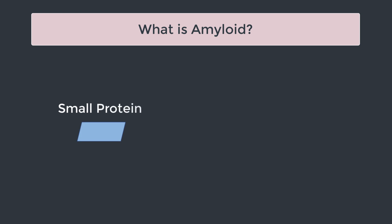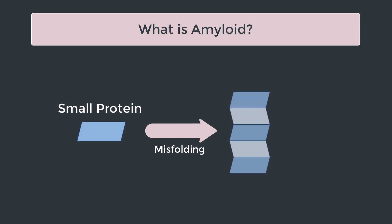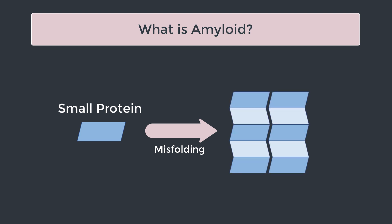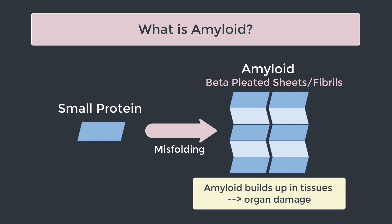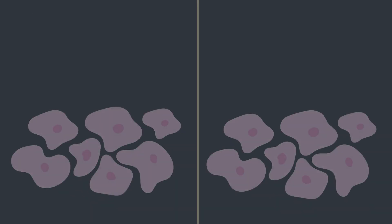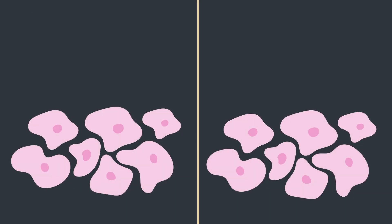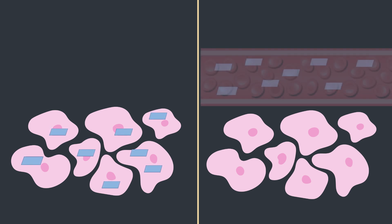So first of all, what is amyloid? The concept of amyloid is basically when a small protein that the body normally makes for some physiological purpose becomes prone to misfolding — typically due to a genetic predisposition or as part of the aging process. When the protein is misfolded, it takes on a molecular structure which makes it join up with more of the same misfolded protein, and so all of these little proteins join together in tissues to form beta-pleated sheets or fibrils. It's these beta-pleated sheets or fibrils that are the amyloid.